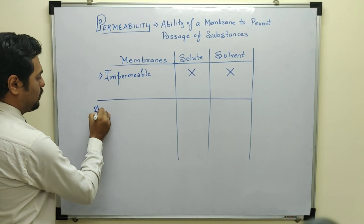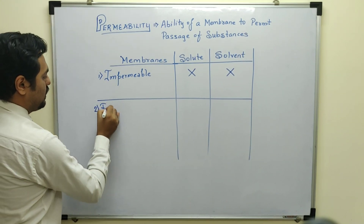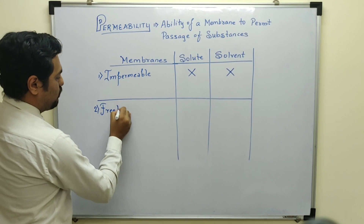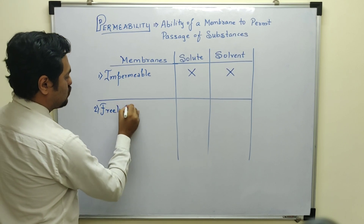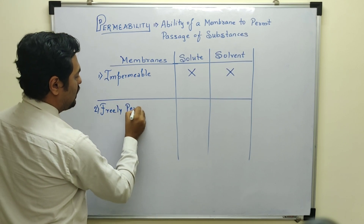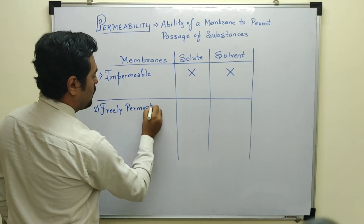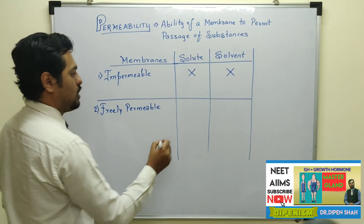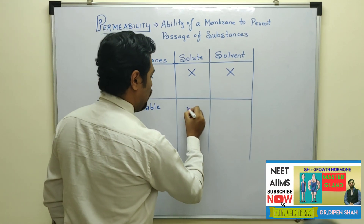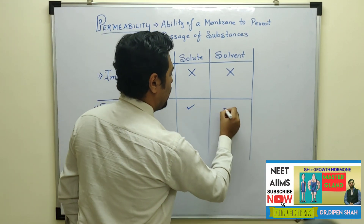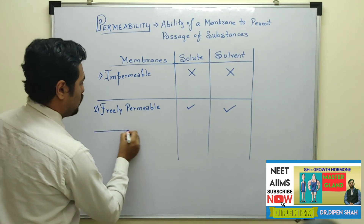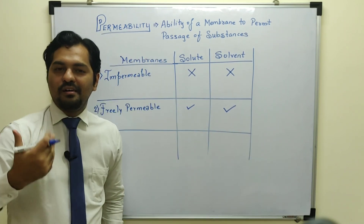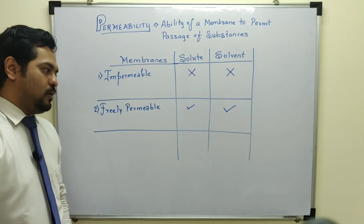The second type is the completely opposite — that is known as the freely permeable membrane. A freely permeable membrane is one which will allow solute molecules as well as solvent molecules to pass through. So both solutes and solvents are allowed — that makes it freely permeable.